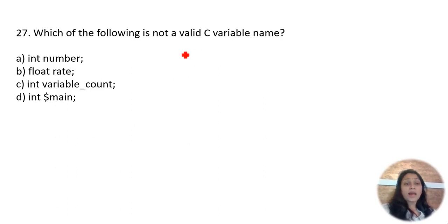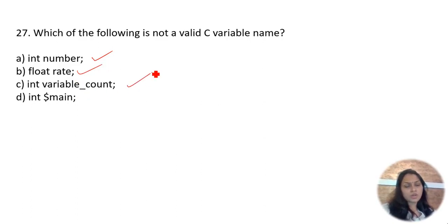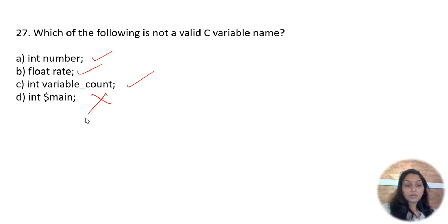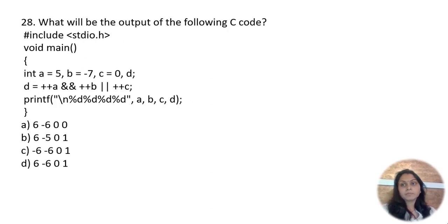Which of the following is not a valid C variable? 'int number' is correct. 'float rate' is correct. 'int variable_underscore_count' is correct — underscores are allowed. But 'int $main' starts with a special character, which is not allowed. Variable names must start only with letters (uppercase or lowercase), not special symbols.